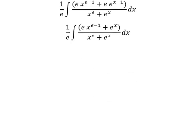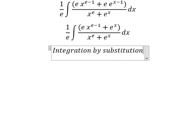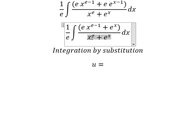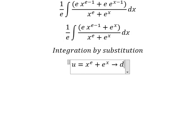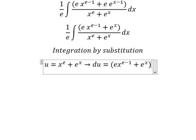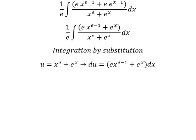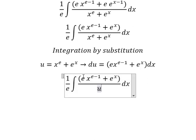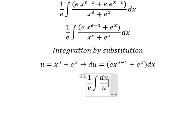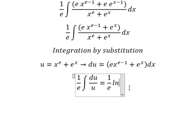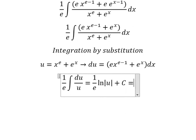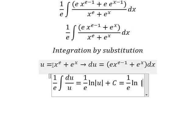Now we can use integration by substitution. So I will put u equals to this one. Later, we do the first derivative for both sides. So this one will change for u, this one will change for u, and this one will change for du. And now we have the final answer about u, which is this one.